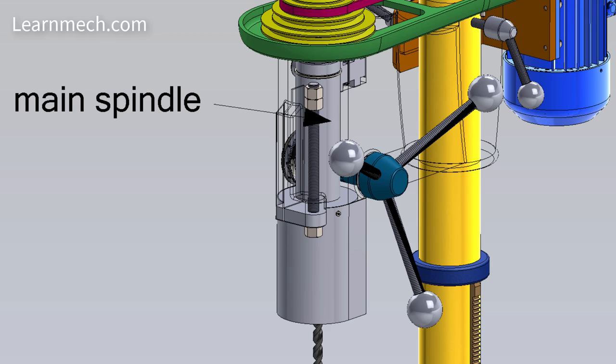The spindle is made up of alloy steel. It rotates as well as moves up and down in a sleeve. One end of the spindle is connected with the pulleys and the other is connected with the chuck.